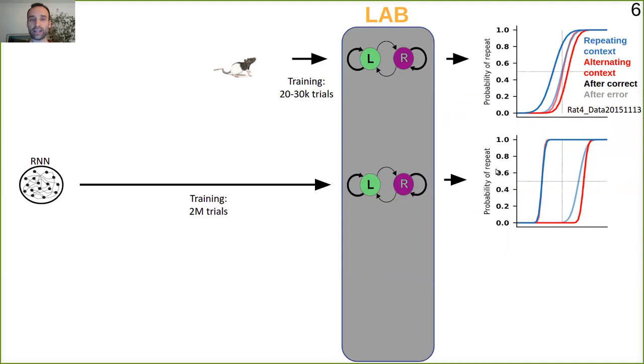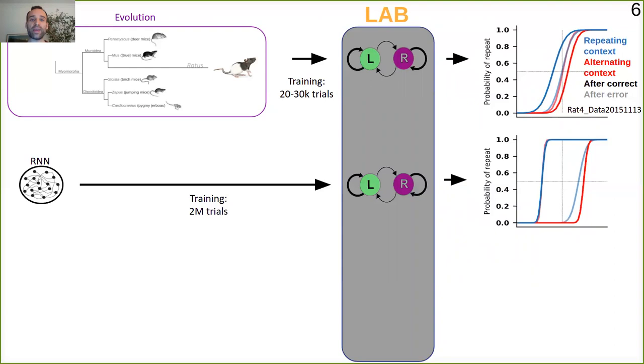Here our hypothesis is that rats arrive to this task with a background shaped by evolution and development that prevents them from fully exploiting the statistics of the task. The brain arrives to the task, so to speak, with priors, and that's the best solution they can find.